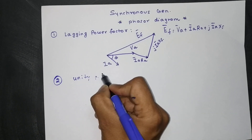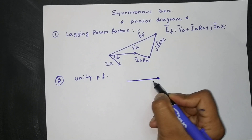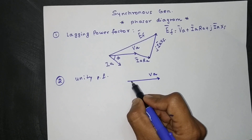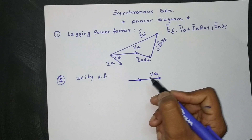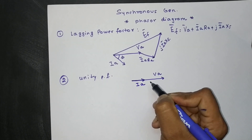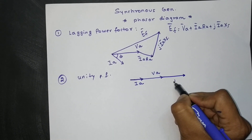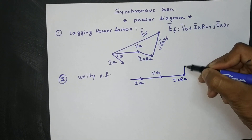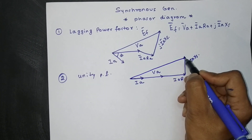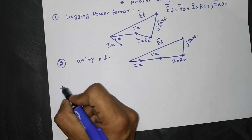The second case is unity power factor. Same way, we start with VA as reference. This time the armature current IA is along VA because there is no phase difference between IA and VA — the angle is zero degrees. We extend to the IA·RA drop and perpendicular to that is j·IA·Xs, and the resultant is again EF.